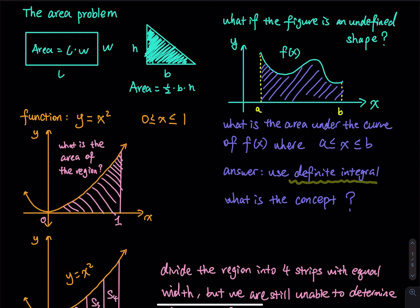In this lesson we are going to go a little bit deeper. If you look at the figure on the right, what if the figure is an undefined shape? I have an xy-axis and a function f(x), and I show you the graph — the curve. I am only interested in the domain between a and b. My question is: what is the area under the curve? That is not a rectangle, that is not a triangle, and I cannot recall a formula from the past to find it.